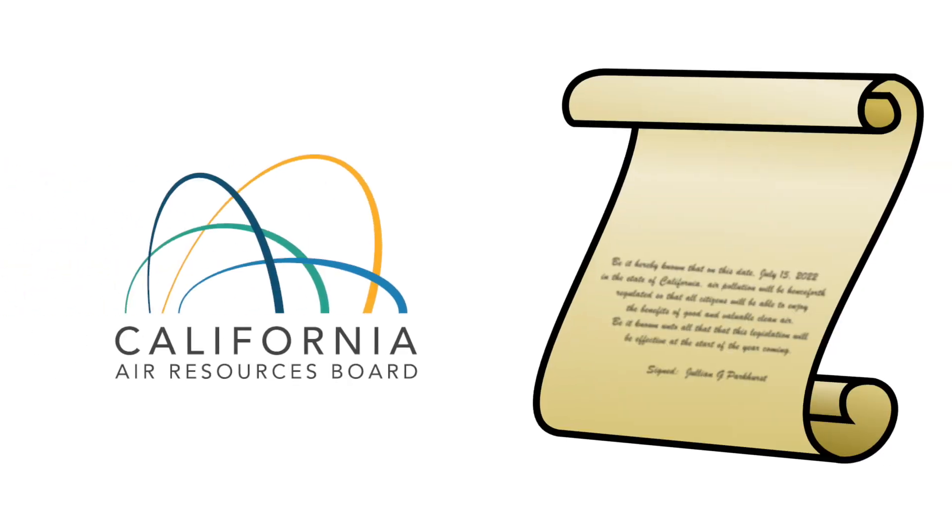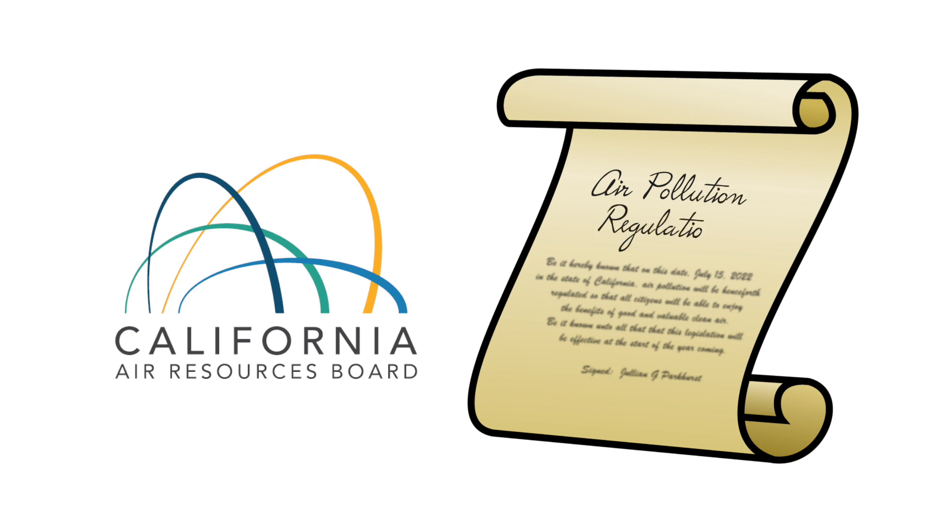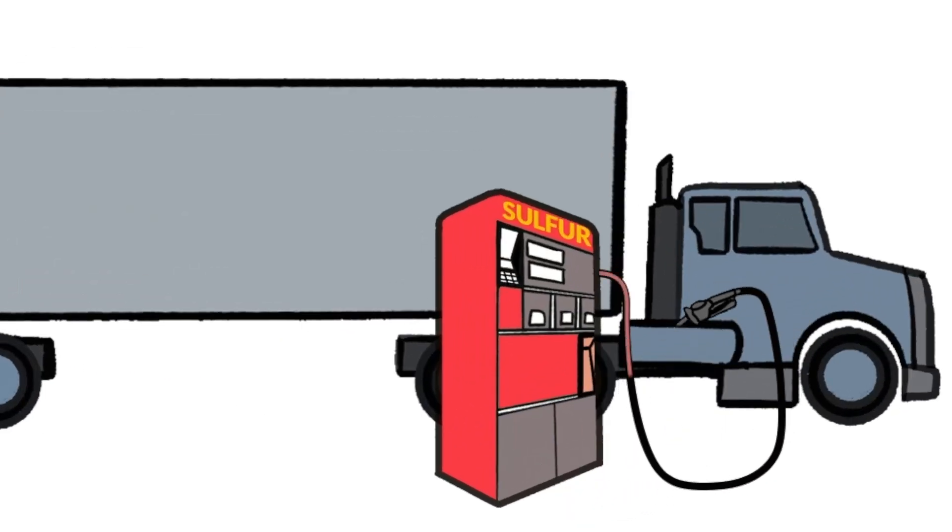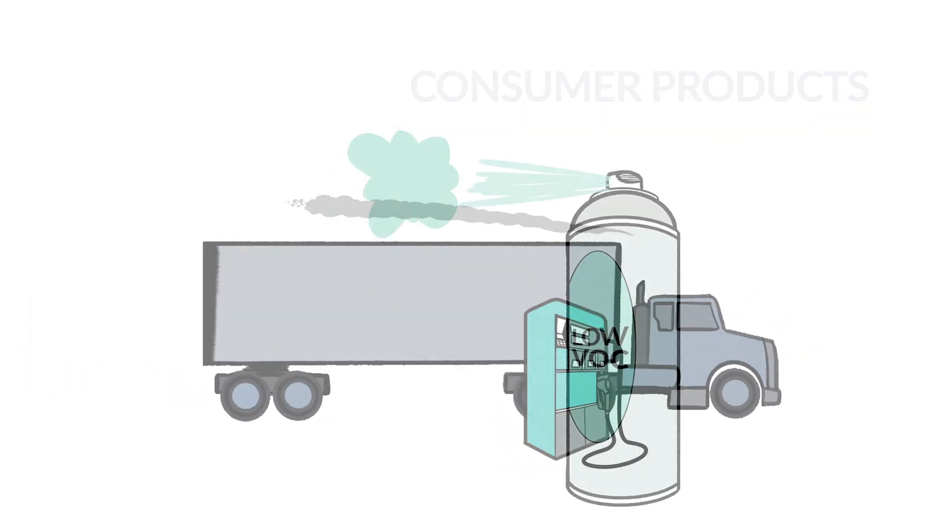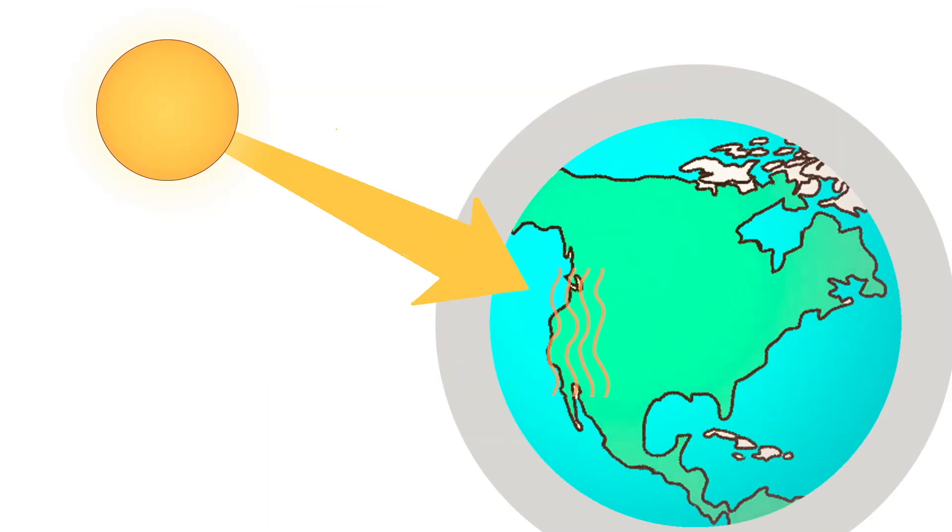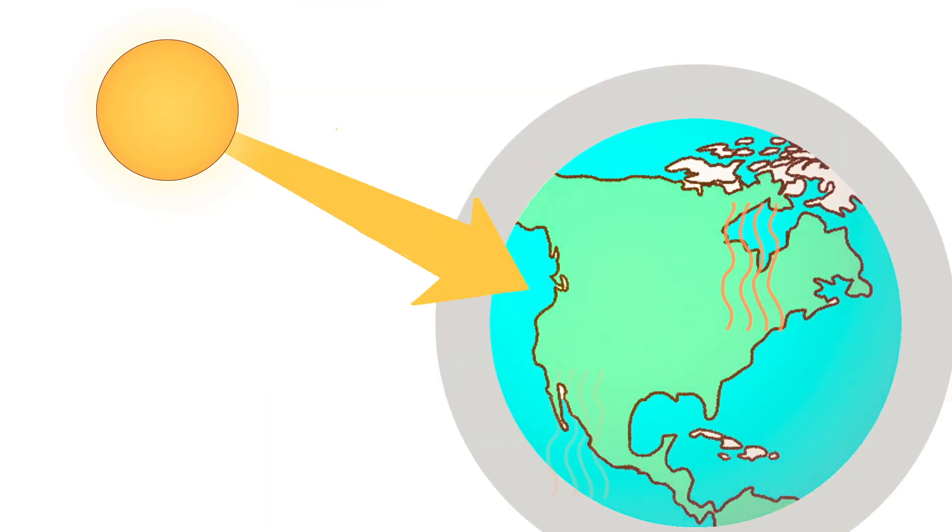The California Air Resources Board, or CARB, is responsible for developing and enforcing air quality regulations for a range of statewide pollution sources including vehicles, fuels, and consumer products, and for regulating greenhouse gas emissions from all sources.